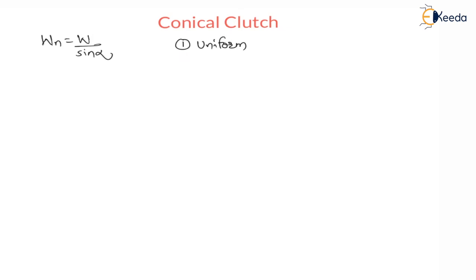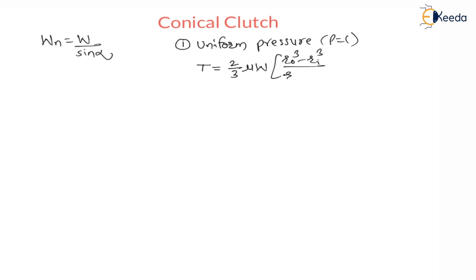As per uniform pressure theory, where pressure is constant, the torque transmitted by single plate clutch is T = (2/3) × μ × W × (Ro³ − Ri³) / (Ro² − Ri²), where T is the torque transmitted, μ is the coefficient of friction, W is the normal reaction or normal force, Ro is the outside radius, and Ri is the inside radius.